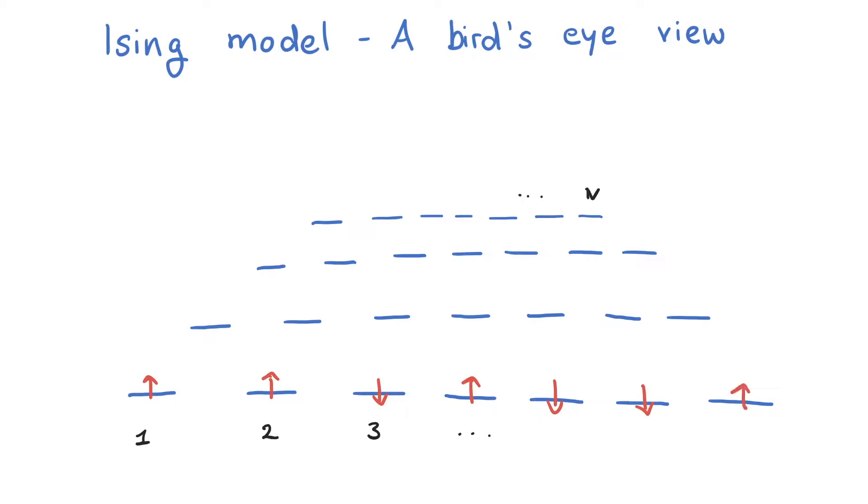The goal here is to introduce the Ising model without going into details about its solution. Suppose we have a system of n sites with two possible states. That could, for instance, represent localized spins one half that can be either up or down.